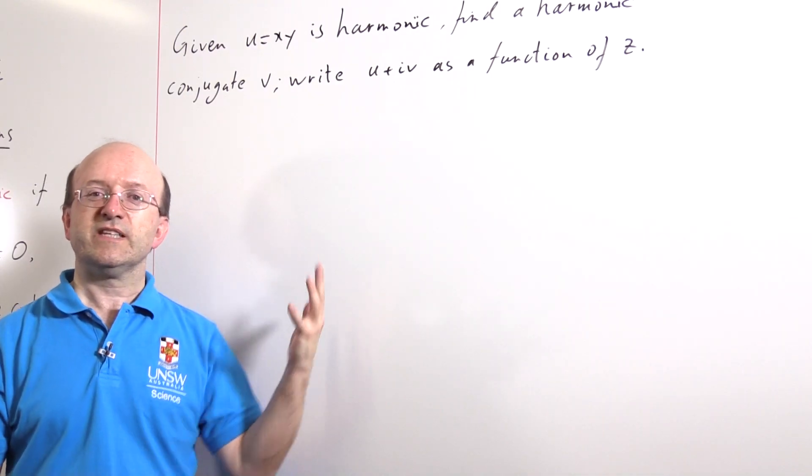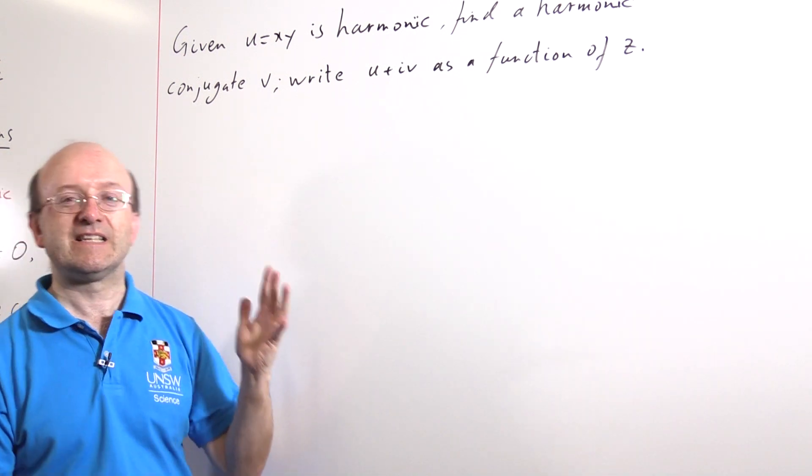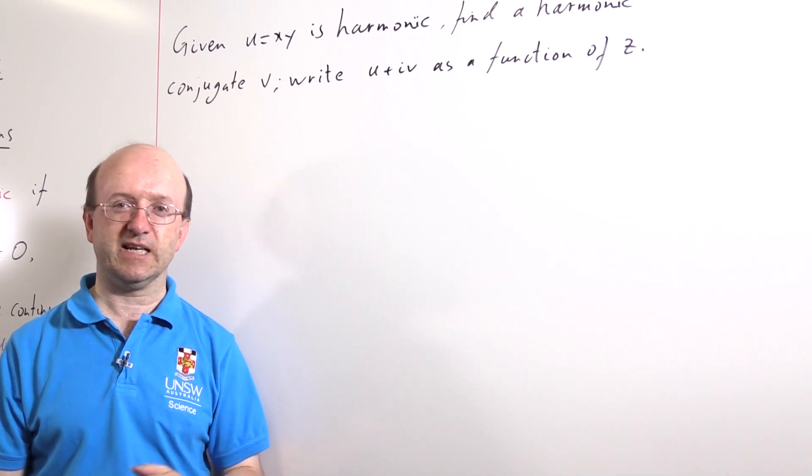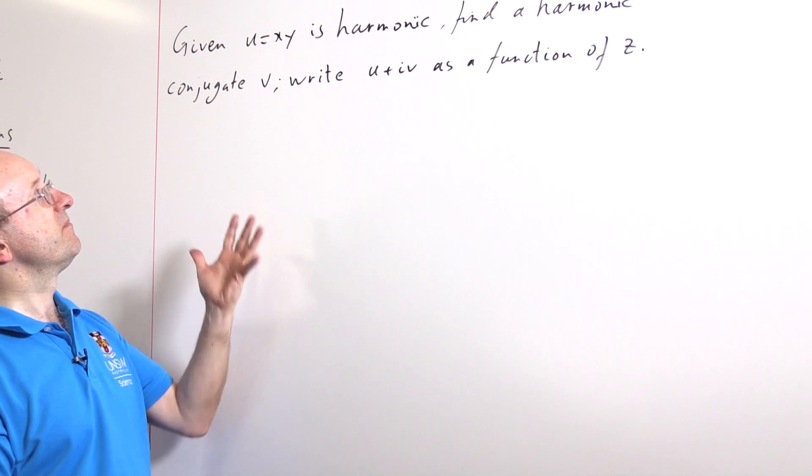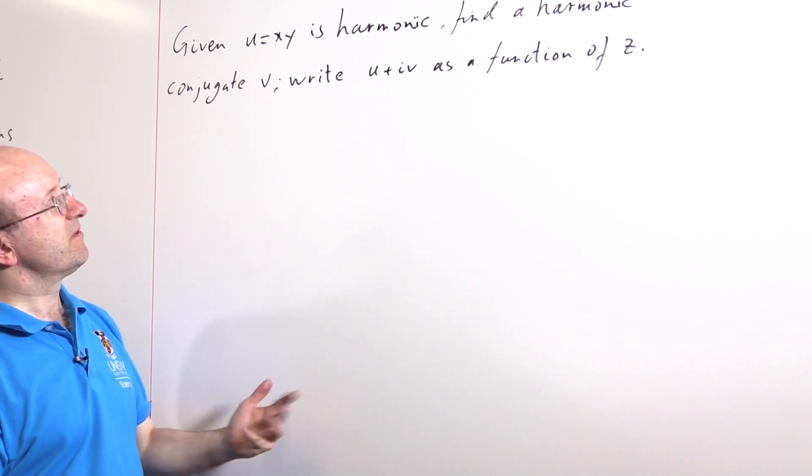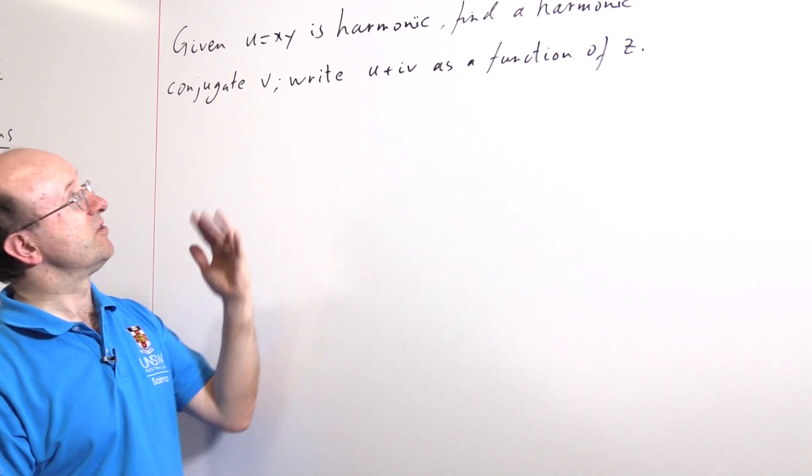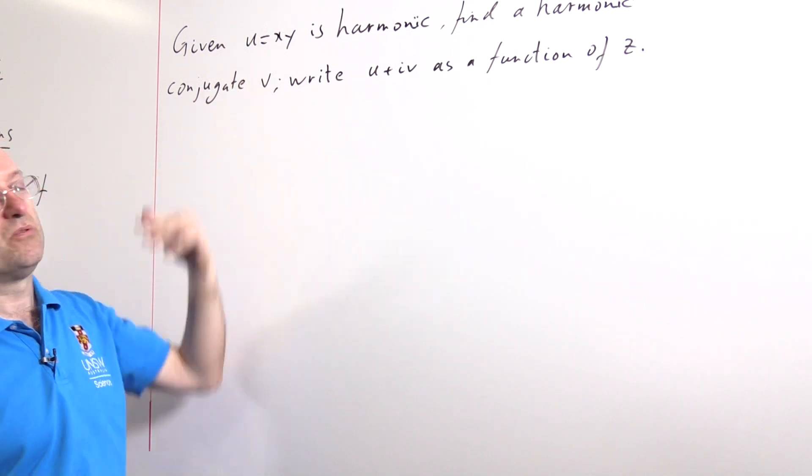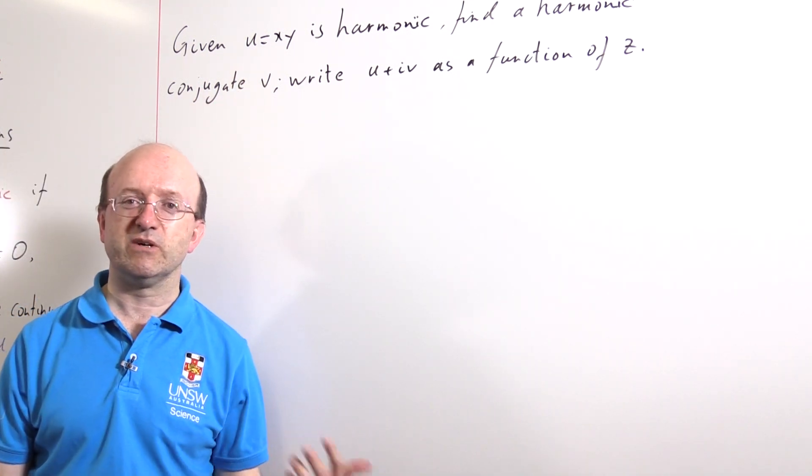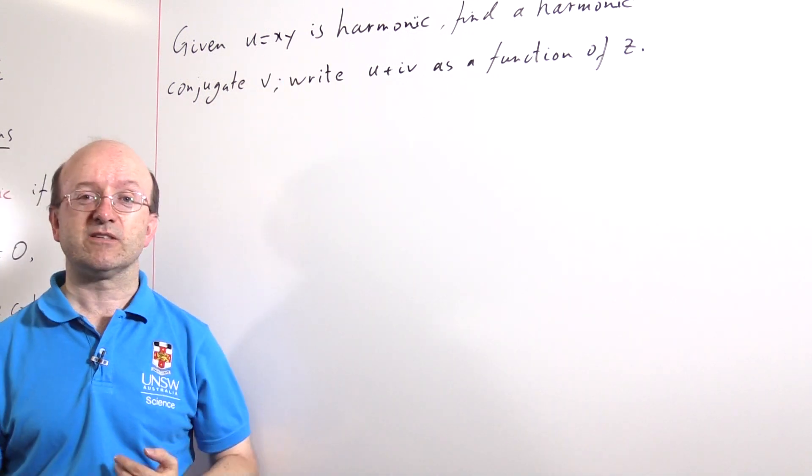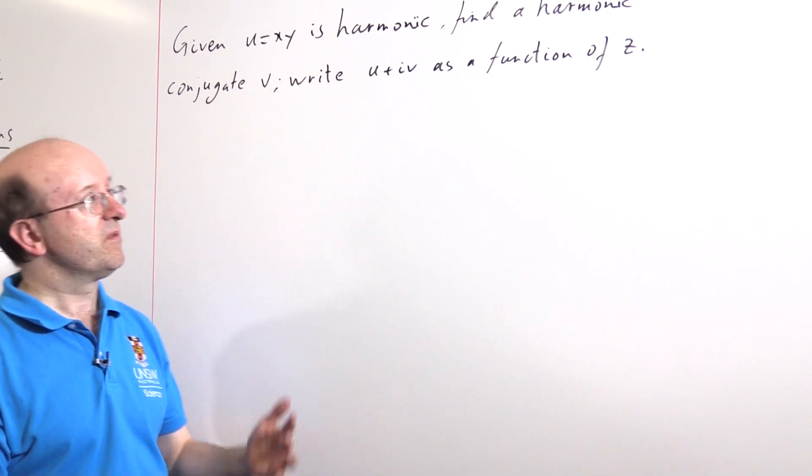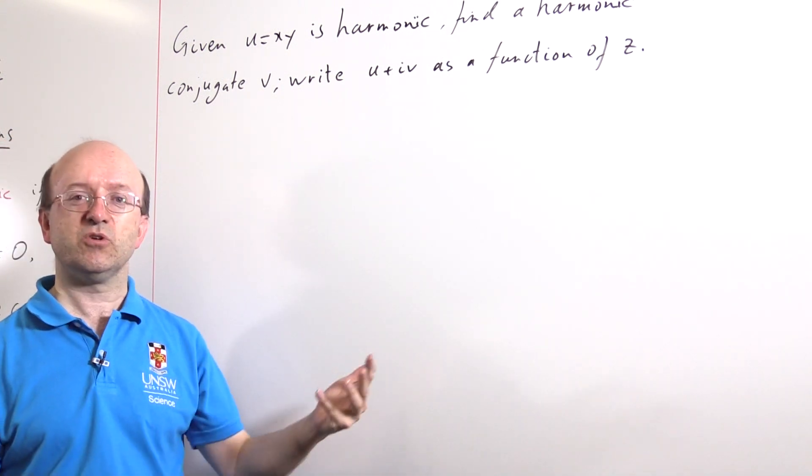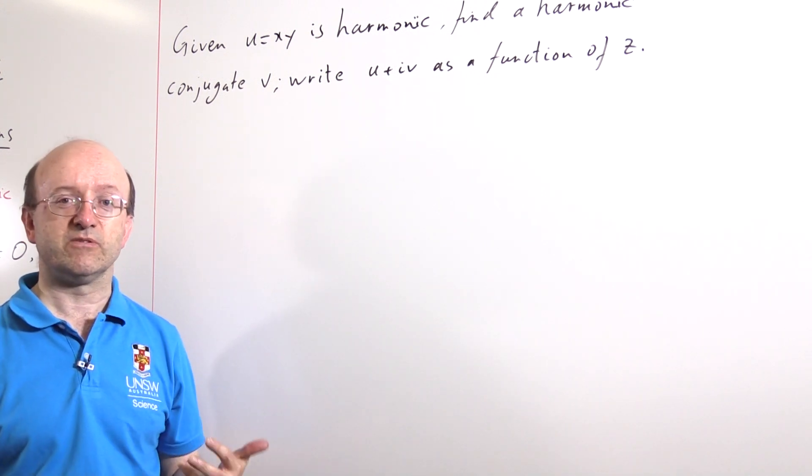All right, so this is the sort of problem that you might get faced with. I've picked a particularly simple harmonic function here just to show you what's going on. Given that u = xy is harmonic, we want to find the harmonic conjugate v and write u + iv as a function of z alone. It's not hard to prove that xy is harmonic. It satisfies the Laplace equation. But we're not asked to prove that. So the question is, how do we actually find a harmonic conjugate given u?